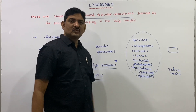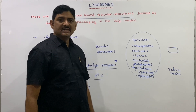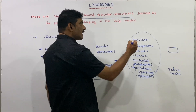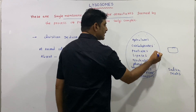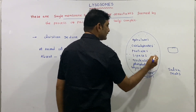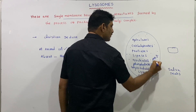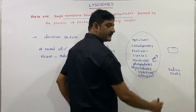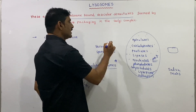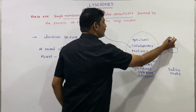The hydrolytic enzymes work at acidic pH. The reason for the acidic pH — pH 5.1 — inside the lysosome is that hydrogen ions are pumped in from the cytoplasm.